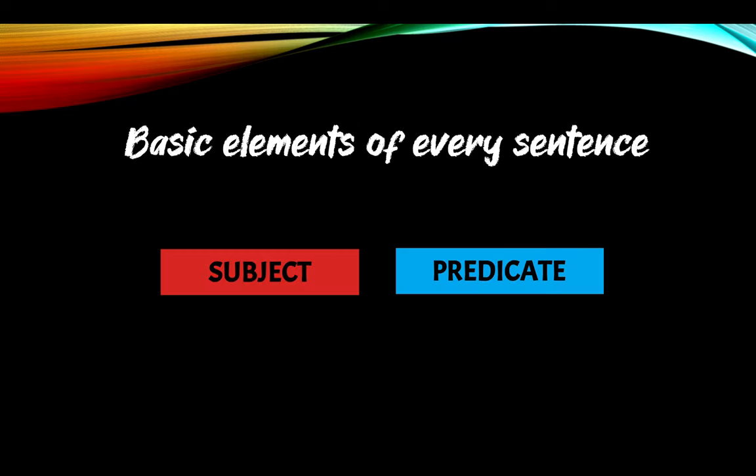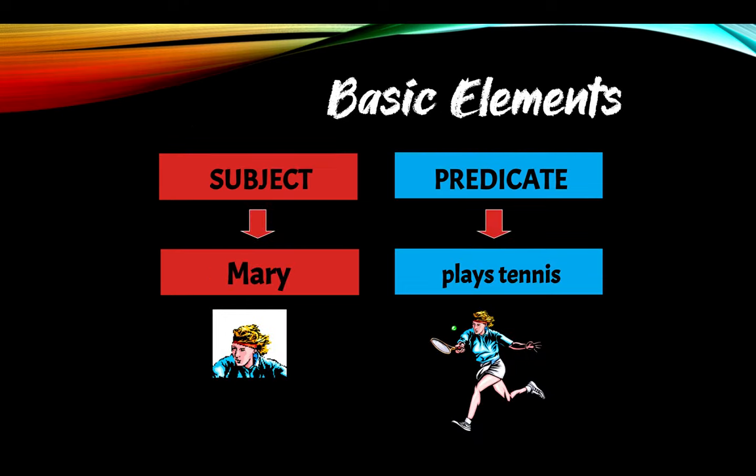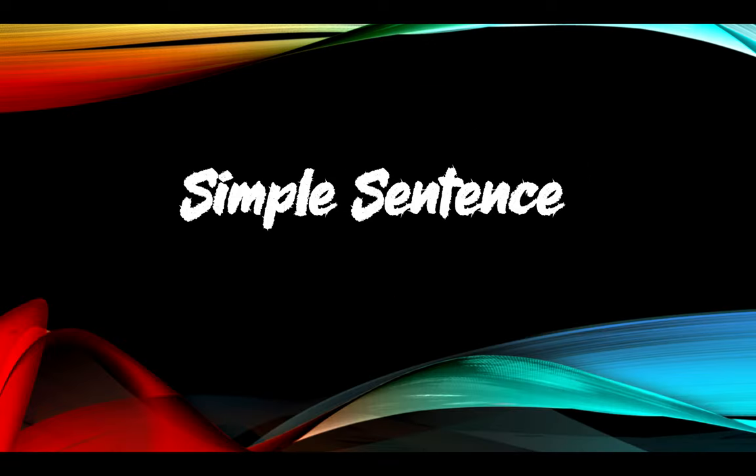By now you know that every sentence has a subject and a predicate, right? These are the elements of every sentence. Like for example, Mary plays tennis — basic elements. So Mary is the subject, and the predicate is plays tennis. You know that in the predicate we start with a verb, like in this case plays.